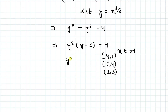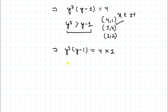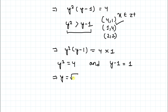By noticing the equation, y² must be greater than y minus 1. The only valid factor pair satisfying this condition is y² = 4 and y minus 1 = 1. Taking the square root, y equals plus or minus 2. Since x is a positive integer, the negative value of y is discarded, giving us y equals 2.